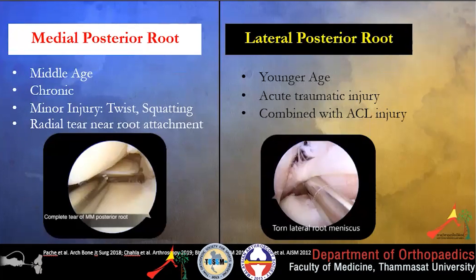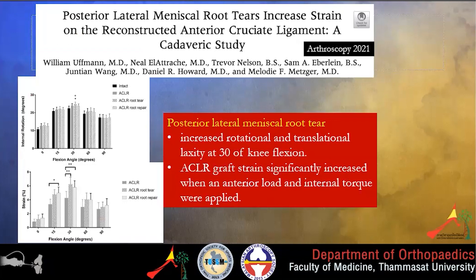What is the difference between medial and lateral meniscus root tears? Medial meniscus root tear is common in middle-aged patients, occurs in chronic situations such as deep squatting, and the radial tear is usually near the root attachment. In contrast, lateral meniscus root tear is found in younger patients with traumatic injury and is usually in combination with ACL injury.